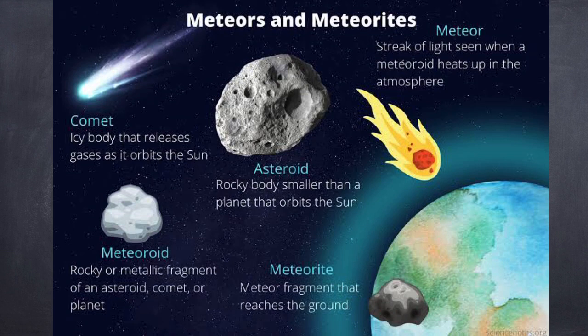Asteroids are rocky space bodies of different sizes. Most of them rotate in a region called the belt of wonder asteroids. The belt of wonder asteroids is a region that separates the group of the inner planets from the group of the outer planets.